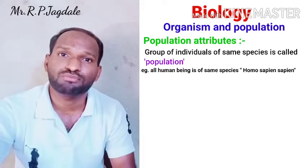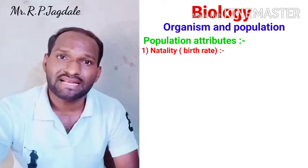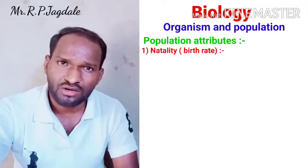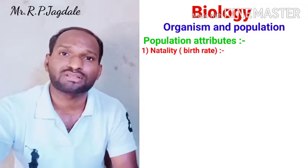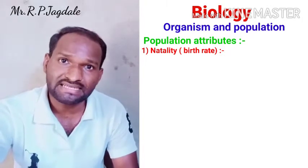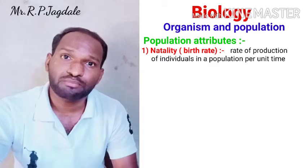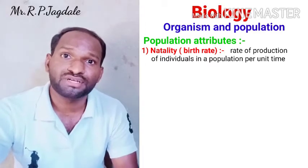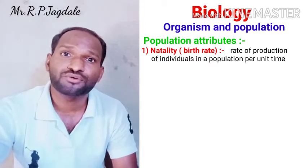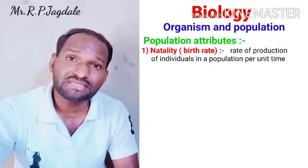We are going to see some of the population attributes. First is natality, or we can call it birth rate. What is natality? It is the rate of reproduction of new individuals in a population per unit time and per unit area.